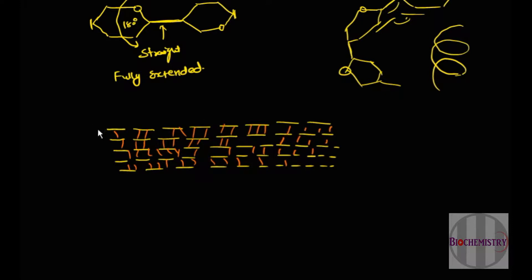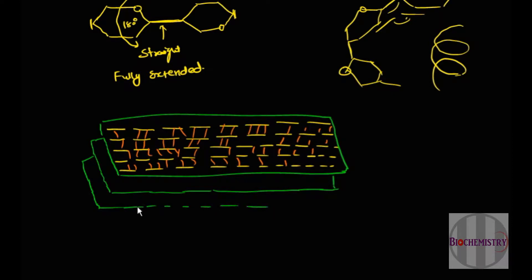Because of this relationship, there is a formation of one two-dimensional sheet. Now there are so many sheets, one above the another. There is a stacking of these sheets.